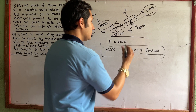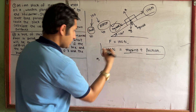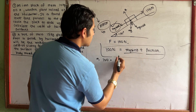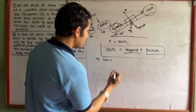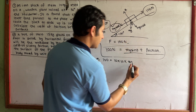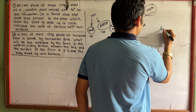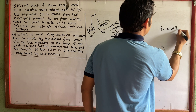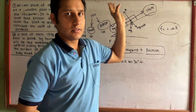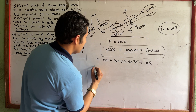What is the value of M? M is 10. G value is 10. Sin theta, theta value is 30 degrees. What is the friction? Friction FR is equal to mu into R — the coefficient of friction into normal reaction. That is the formula. So friction is mu R.